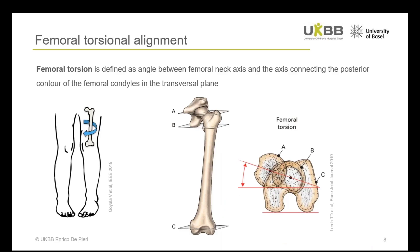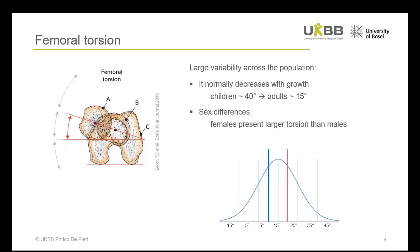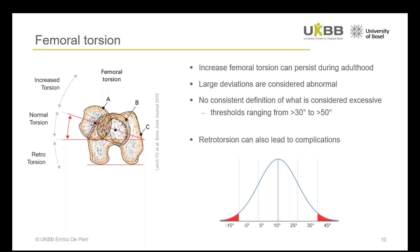We are particularly interested in understanding the effect of femoral torsional alignment. Femoral torsion is defined as the angle between the femoral neck axis and the axis connecting the posterior contour of the femoral condyles in the transversal plane. There is quite some variability across the population — children normally present a large femoral torsion of approximately 40 degrees, which spontaneously resolves with growth and stabilizes around 15 degrees during adulthood. There are also sex differences, with females presenting larger torsion compared to males. In some cases, increased torsion can persist into adulthood.